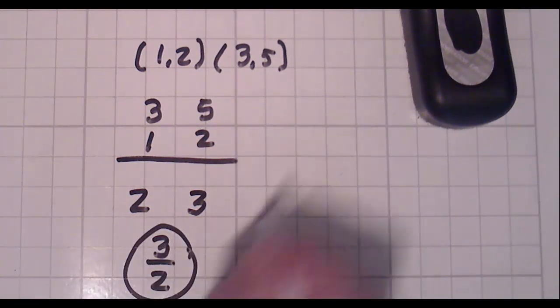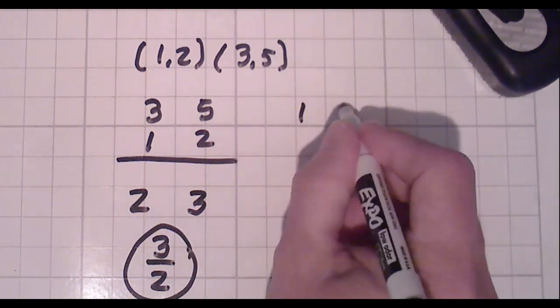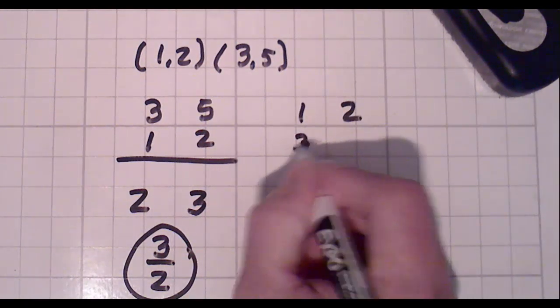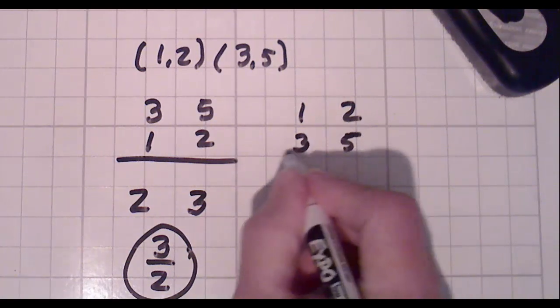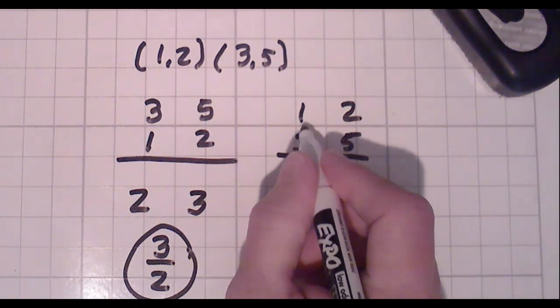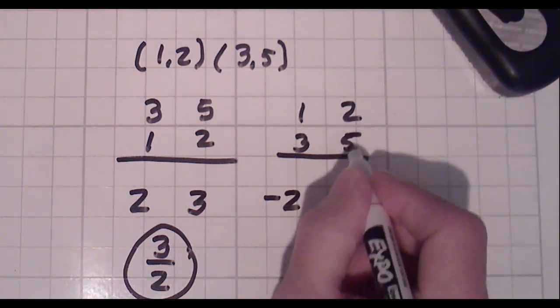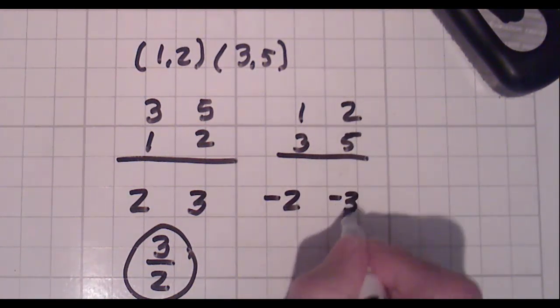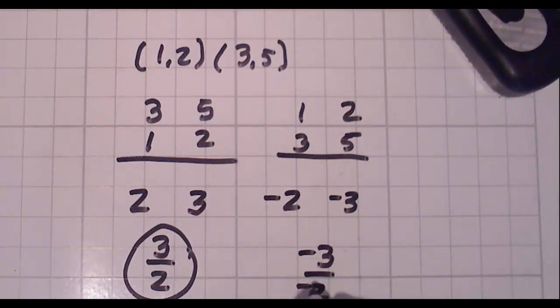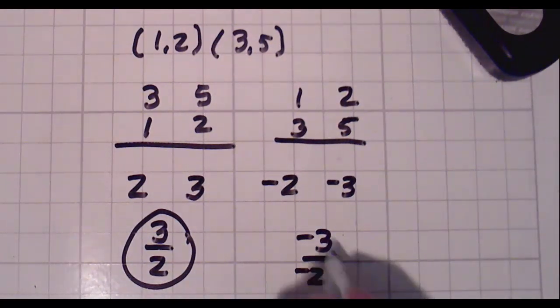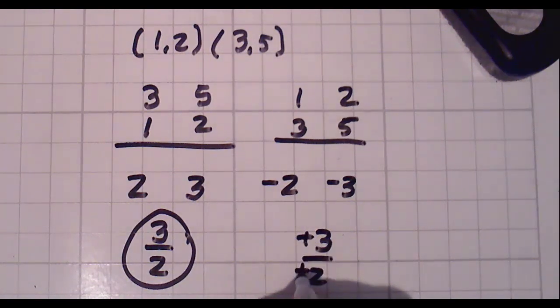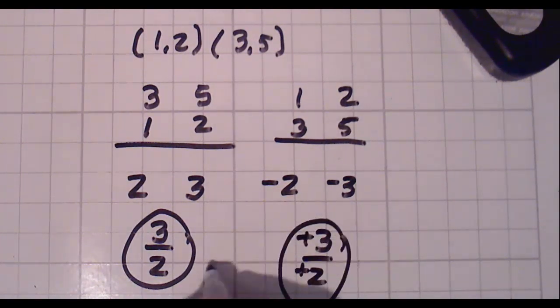Now let me just prove to you that it works no matter which set you put on the top. So in this case, let's do the 1, 2 on the top, and the 3, 5 on the bottom. Top number minus bottom number, 1 minus 3. That's negative 2, right? 2 minus 5 is negative 3. Second number divided by first number. And you're saying, but that's negative 3 over negative 2. And originally we got 3 over 2. Yes, but 2 negatives make a positive. So 3 halves, 3 halves. Exactly the same.